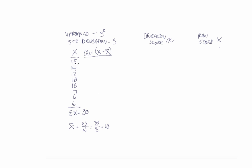So 15 minus 10 is equal to 5, 14 minus 10 is 4. If we look at the sum of the deviation scores, 5 and 4 is 9, plus 2 is 11, and then this sums to negative 11. So the deviation scores always sum to 0.